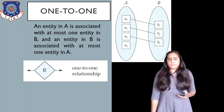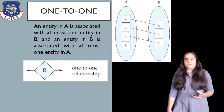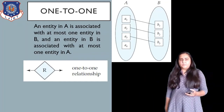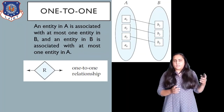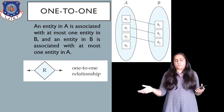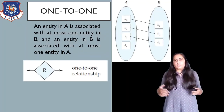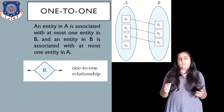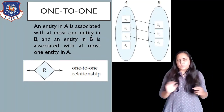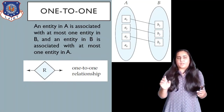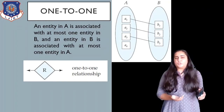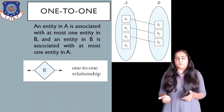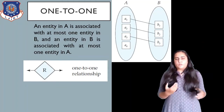To show it in an ER diagram, you would draw it in this manner. You will show A and B on the left and right sides of the rhombus, and on the rhombus, the lines going out will have arrows at the end. These arrows show that it is a one-to-one relationship.